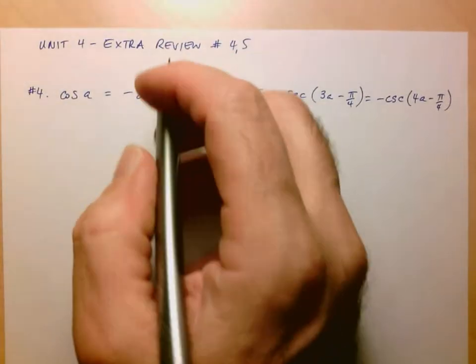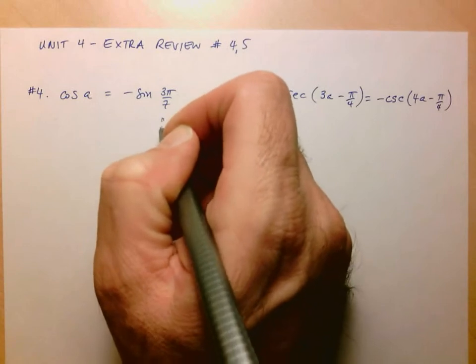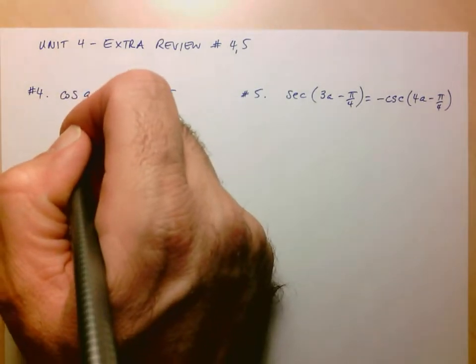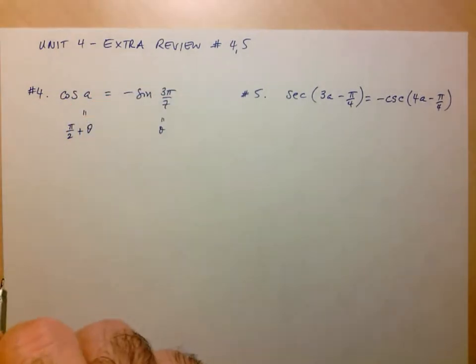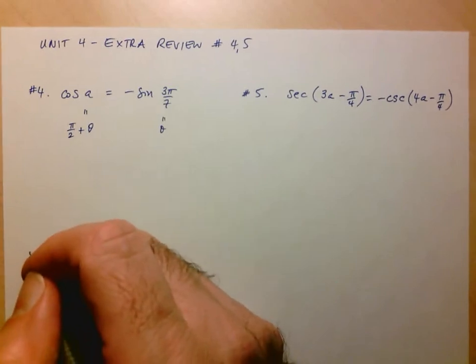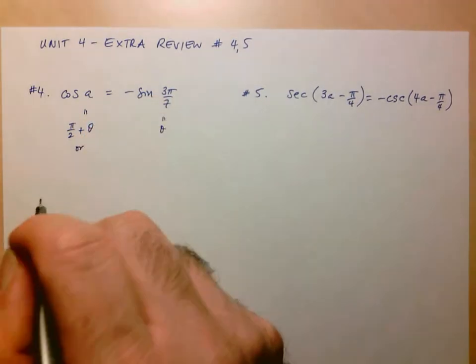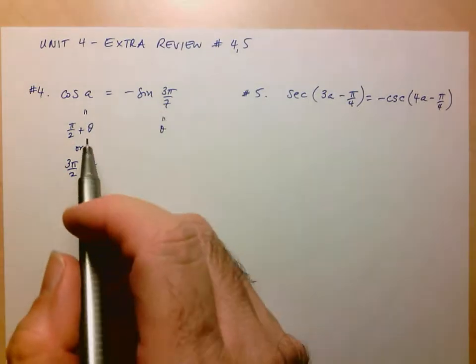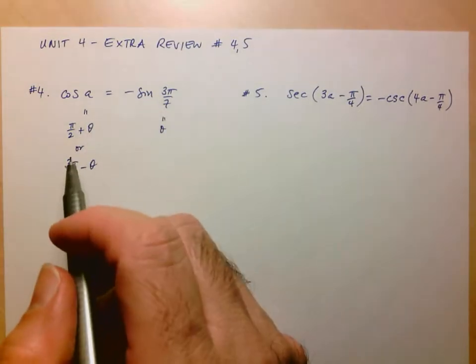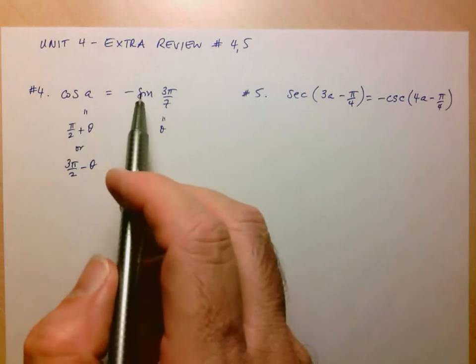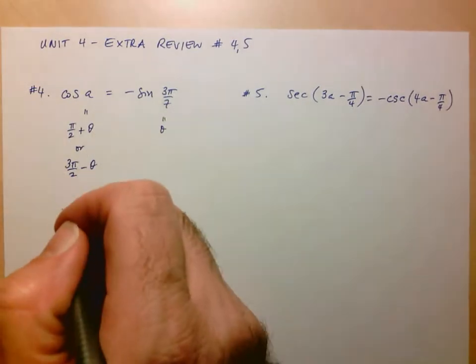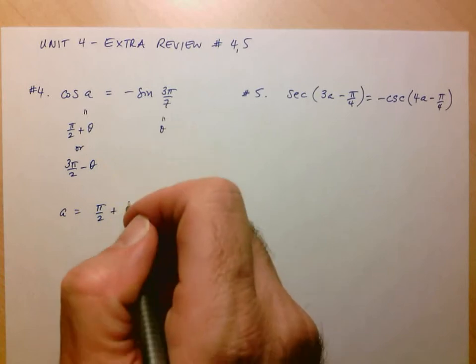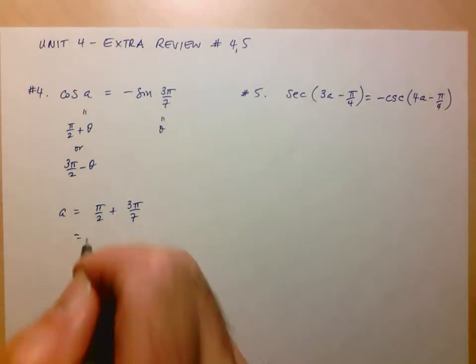If I think of 3π over 7 as being my angle theta, then it means that A needs to be equal to either π over 2 plus theta. Now notice they are asking us for two answers, and so this is why I'm going to use both of them. Or I could have A also equaling 3π over 2 minus theta. These are the two relationships in which a cosine value is equal to the negative of a sine value. So that means A has to be equal to π over 2 plus theta, but in this case my theta is 3π over 7. And so now I can just calculate A directly.